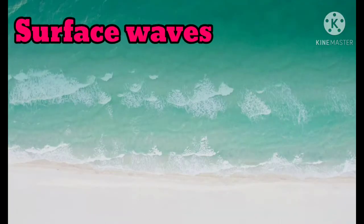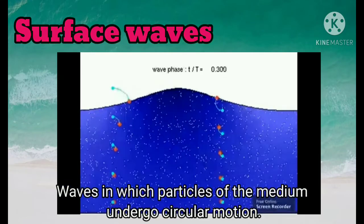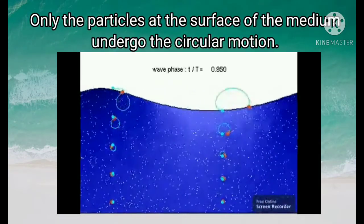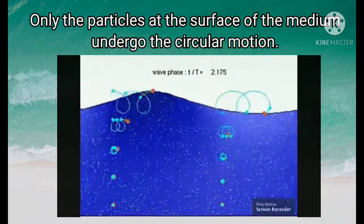Surface waves are waves in which the particles of the medium undergo a circular motion. In a surface wave, it is only the particles at the surface of the medium that undergo the circular motion.